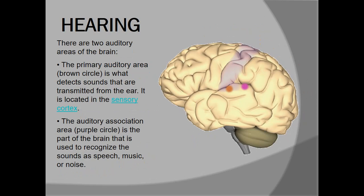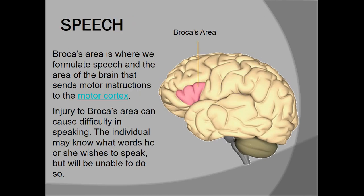Hearing is mainly controlled by two parts. One is the primary auditory area, which detects sounds transmitted from the air and is located in the sensory cortex. Second is the auditory association area, which is the part of the brain used to recognize sound as speech, music, or noise. Coming to the motor part of speech, we have Broca's area — it is part of the inferior frontal lobe. The major function of Broca's area is to produce speech. Damage to Broca's area can cause difficulty in speaking.